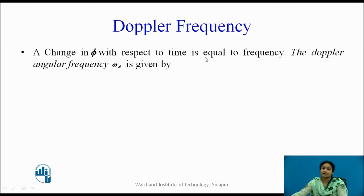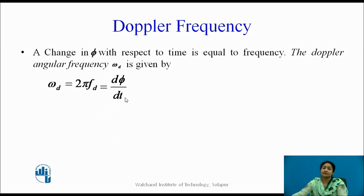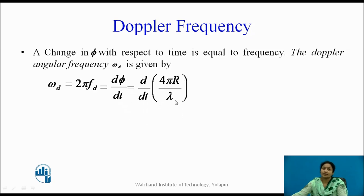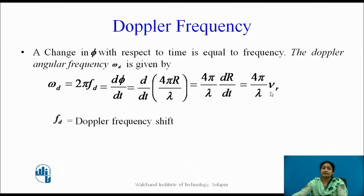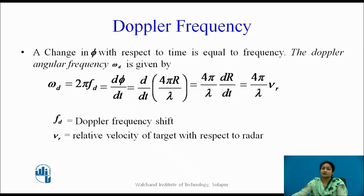The change in φ with respect to time is equal to the frequency. The angular frequency ωd is given by 2π fd, which is equal to dφ/dt. By substituting the value of φ = 2π(2R/λ), we get the equation: ωd = (4π/λ)(dR/dt). Here dR/dt is the velocity vr, so the Doppler frequency fd = 2vr/λ, where fd is the Doppler change in frequency and vr is the relative velocity of the target with respect to the radar.